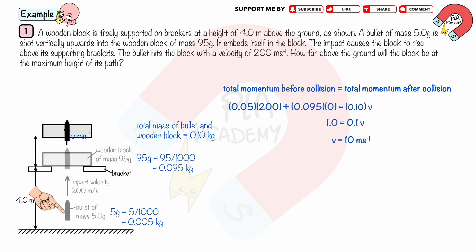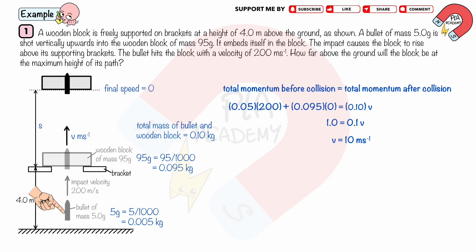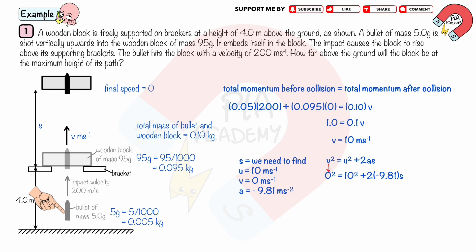When both bullet and block rise above the supporting bracket to reach maximum height, their speed is 0 as shown. During this motion, we need to find displacement S. The initial velocity U equals 10, the final velocity V equals 0, the acceleration equals negative 9.81 due to the downward direction, and time T is unknown. Using V squared equals U squared plus 2AS, substituting V equals 0, U equals 10, and A equals negative 9.81, we get displacement S equals 5.0968 meters. So the total distance from the ground equals 9.1 meters to two significant figures.